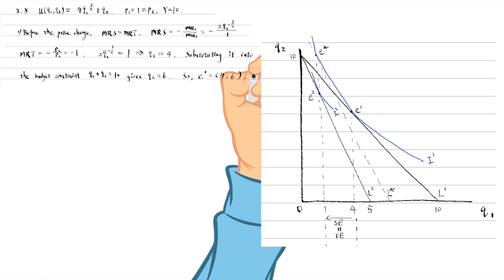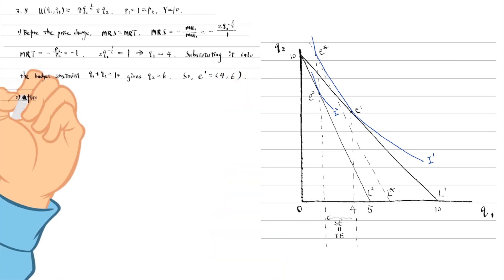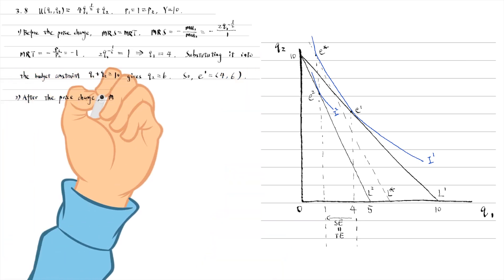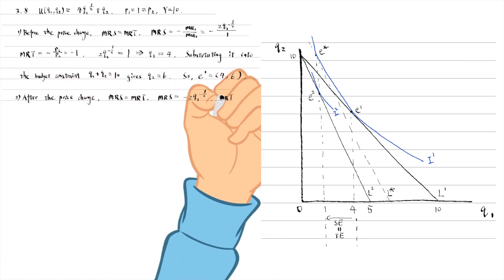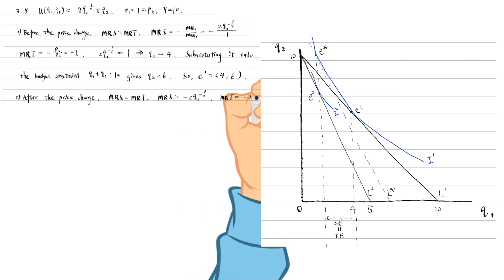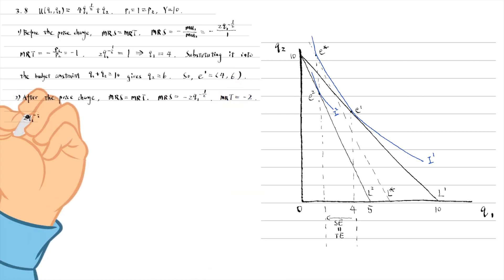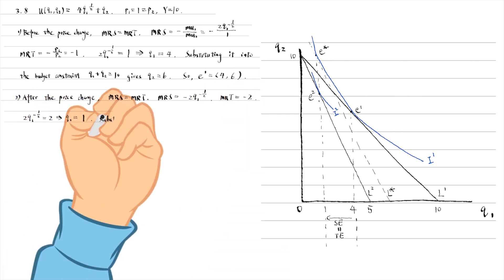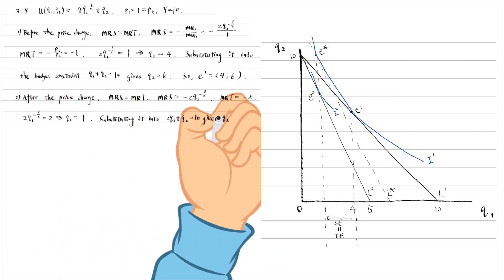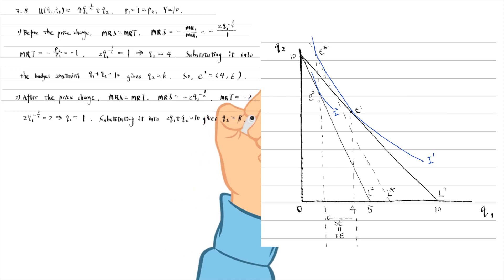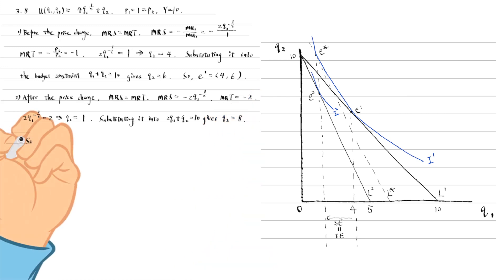Similarly, we calculate the coordinates for the optimal consumption bundle E2 after the price change in the second step. Q1 equals 1 and Q2 equals 8.